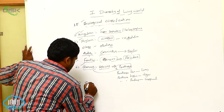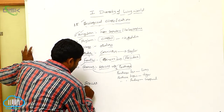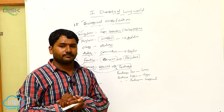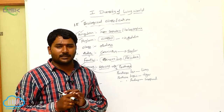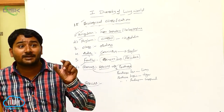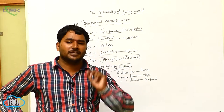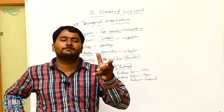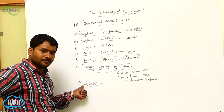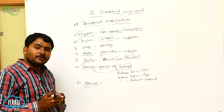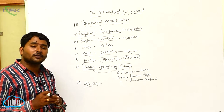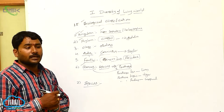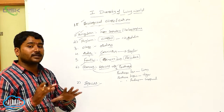Next one is species. Species is a group of similar individuals which share a common gene pool and produce fertile offspring. Here, species produce fertile offspring.